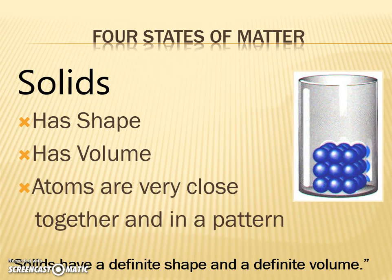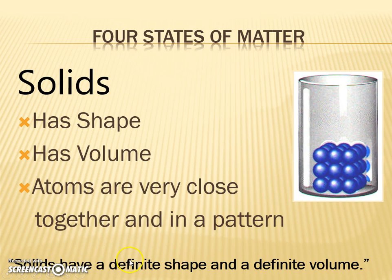There are four states of matter. The very first one we're going to talk about is solid. Like if I was going to pick up this eraser right here, it has a shape of its own, and it also has its own volume — I can measure it. The atoms are all very close together in a very tight pattern, in a nice crystalline shape. Solids have a definite shape and a definite volume, meaning it does have a shape and it does have a volume.